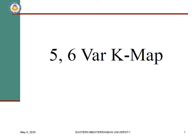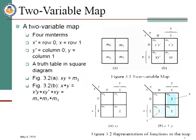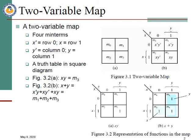In this lecture I will continue the topic of K-maps which I started in the previous lecture. In the recent lecture I covered two variable, three variable, and four variable K-maps, but in this lecture we will study about five and six variable K-maps. But before that, let's do a quick recap of the previous lecture.